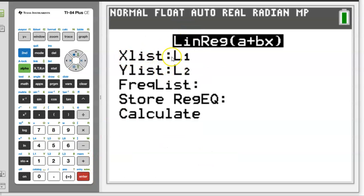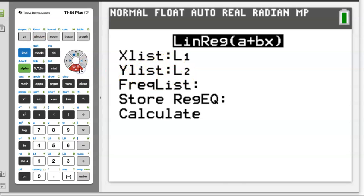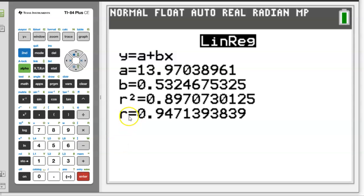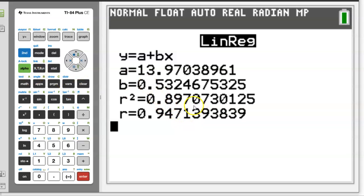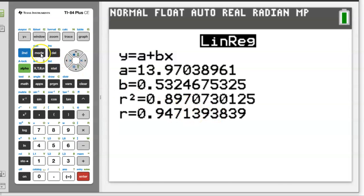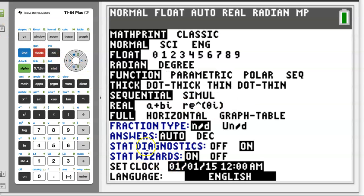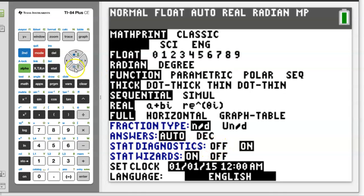Click on that. You have to confirm that your explanatory data is list one. Your Y data, that's the response is list two. Leave all of these other things blank. Frequency lists and store the regression equation. Leave that blank and just click on calculate. And you should get your R value right there at the very, very bottom, 0.9471. If for some reason you do all of this and it doesn't show you R, go to mode and make sure the stat diagnostics is turned on. If you have stat diagnostics turned off, you'll see that down here at the bottom in blue, it will not show you R. So please take note of that.